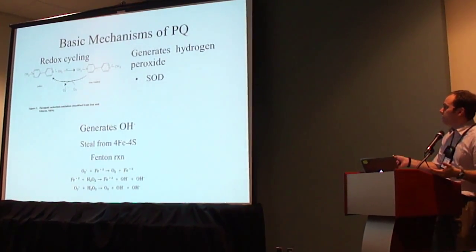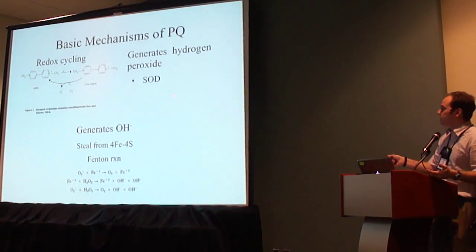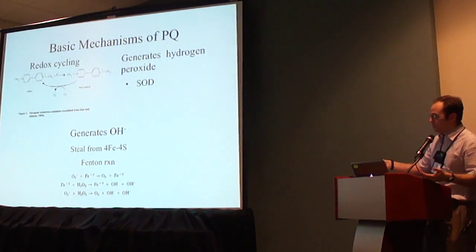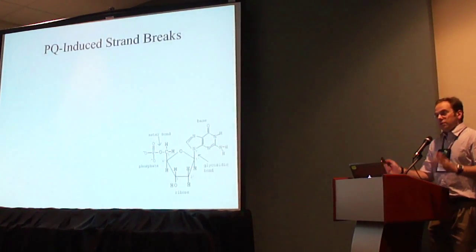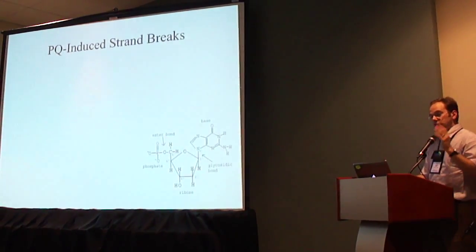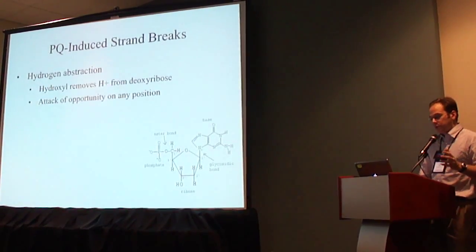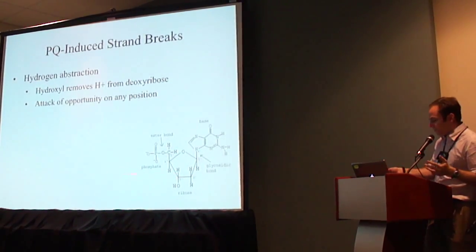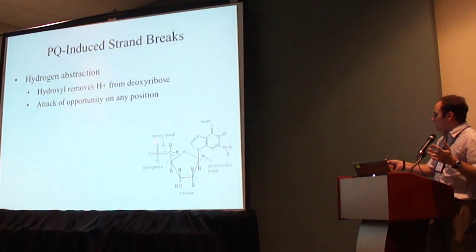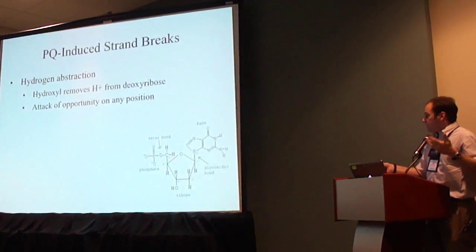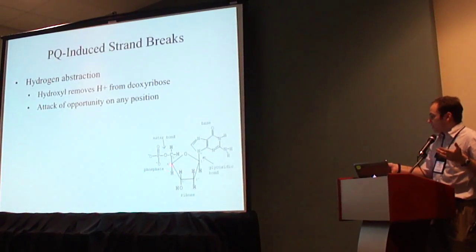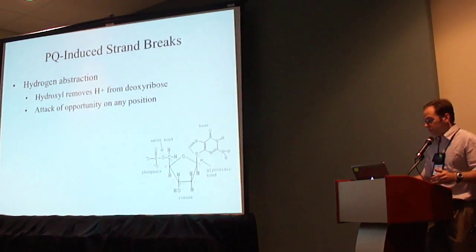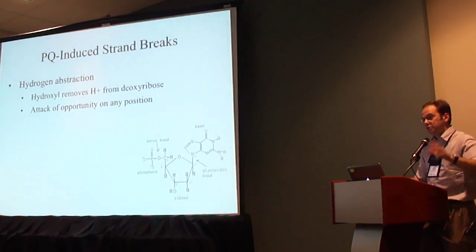Paraquat produces superoxide, which gets turned into hydrogen peroxide by superoxide dismutase. The hydrogen peroxide gets turned into hydroxyl radicals through the Fenton reaction. Hydroxyl radicals can induce strand breakage through a mechanism known as hydrogen abstraction, in which the hydroxyl removes hydrogen atoms from the deoxyribose backbone of DNA and will attack any available position, electrochemically destabilizing the molecule and causing it to break apart.